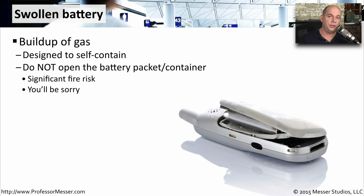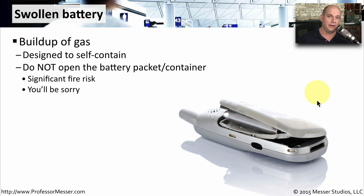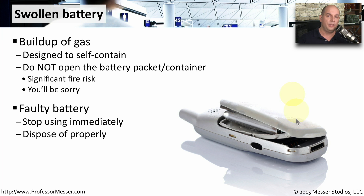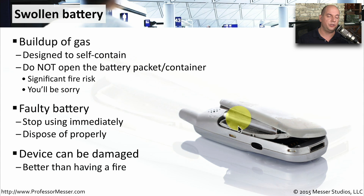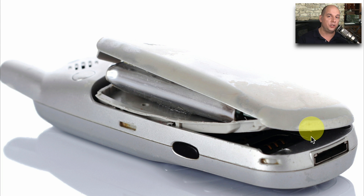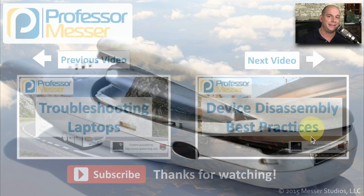A problem that hopefully won't happen to you, but can occur on mobile devices, is a swollen battery. This is due to a fault inside the battery that builds up gas, designed to be contained within the battery enclosure. When that happens, the battery will bulge out, as you see here, and it often creates problems for the device around the battery as well. Do not open this battery container — it contains chemicals that could start a fire. Do not use scissors or anything sharp near it, and stop using the device immediately. Take it to a technician who knows how to dispose of these batteries properly and can address any hardware problems caused by the expansion.